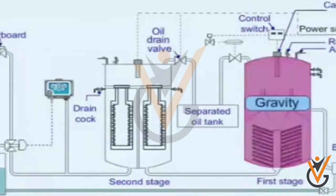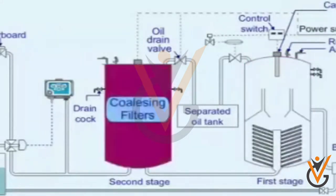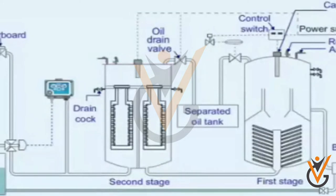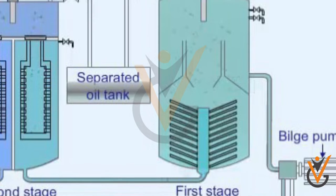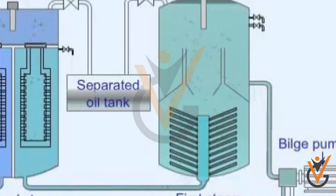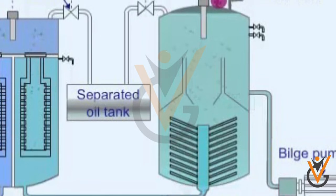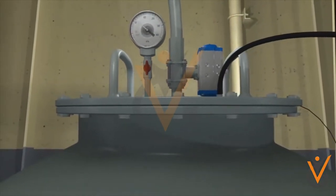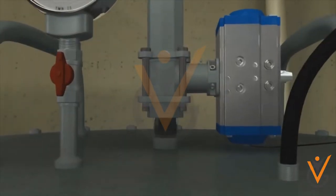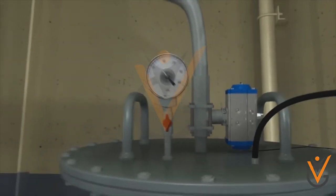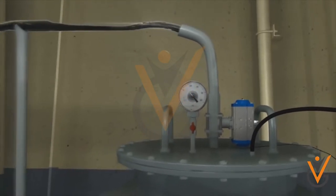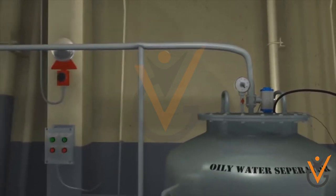Oily water is pumped to the first stage — the coarse separating compartment. Here, oil with a lower density than water rises to the surface, aided by heating coils, in what is known as the collection space. This unit consists of catch plates inside the coarse separating compartment and an oil collecting chamber. Over time, more oil separates and collects in the oil collecting chamber, where the oil content of the water passing through is around 100 parts per million. A controlled valve — pneumatic or electronic — releases the separated oil into the designated sludge tank. A heater may be incorporated for smooth flow and separation.